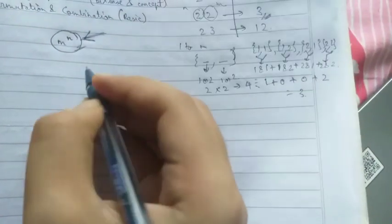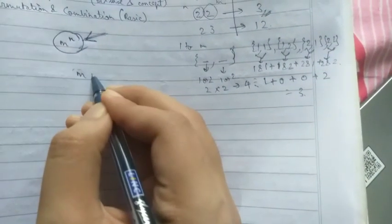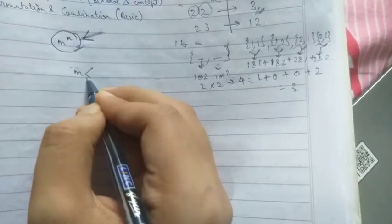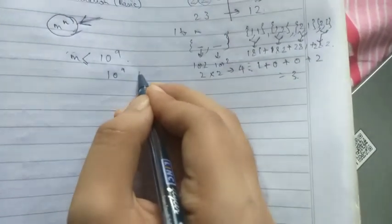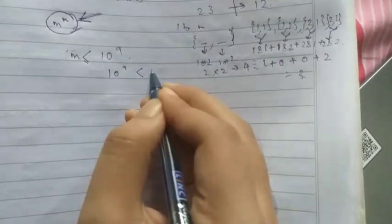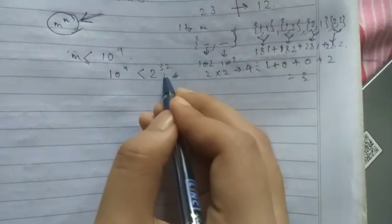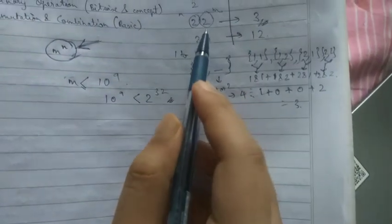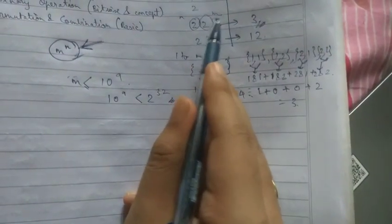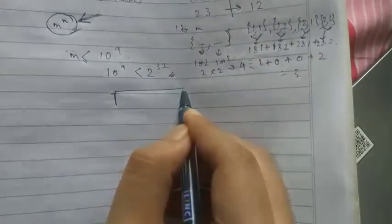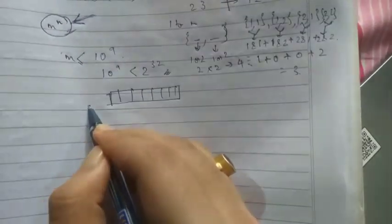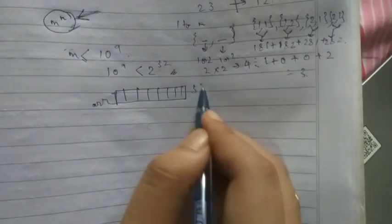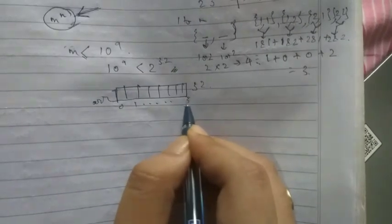Now let's jump to the approach for solving this. We know that m is less than or equal to 10 to the power 9, and 10 to the power 9 is a little less than 2 to the power 32. So the maximum value of m, if represented in binary, won't exceed 32 bits. We will make an array of size 32, from index 0 to 31.